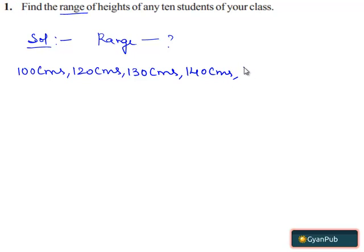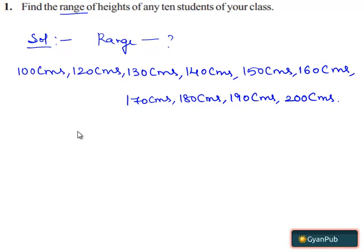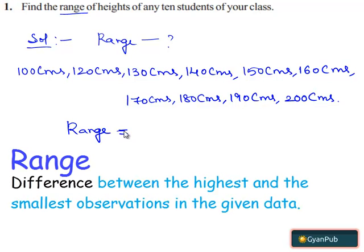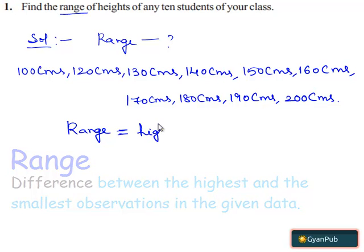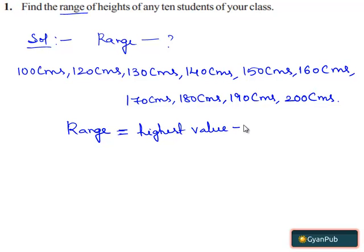150 centimeters, 160 centimeters, 170 centimeters, 180 centimeters, 190 centimeters, and 200 centimeters. Now let's define range. Range can be obtained by subtracting the lowest observation from the highest observation. So range is equal to highest value minus lowest value.